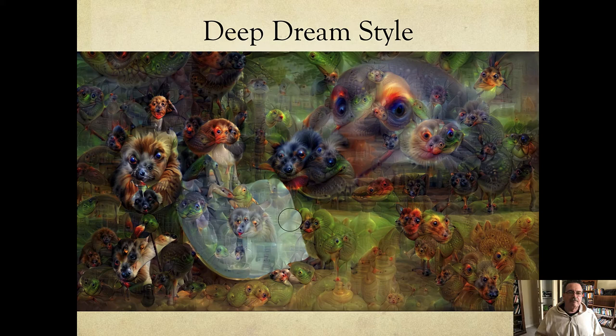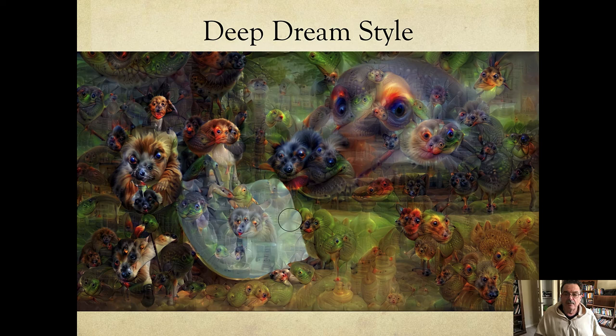One of the first AI art packages to come around was Google's Deep Dream, and you can see the results here — it looks pretty bizarre, like a bunch of animal faces placed in areas consistent with the original painting. Deep Dream is available through a Colab notebook, and there's also a Deep Dream generator you can find by searching online. There are hyperparameter knobs you can adjust.